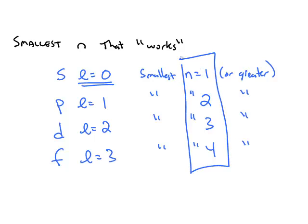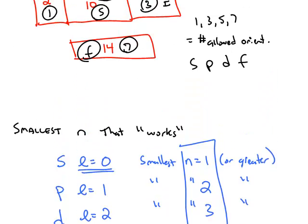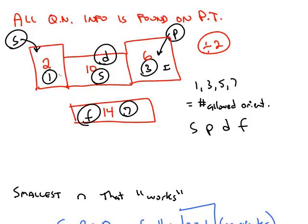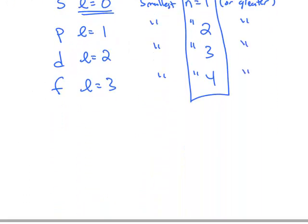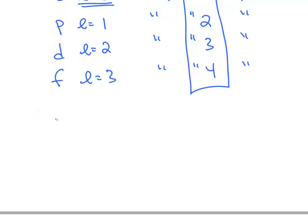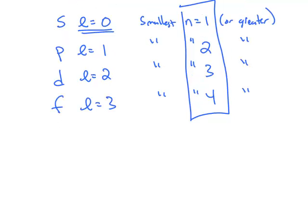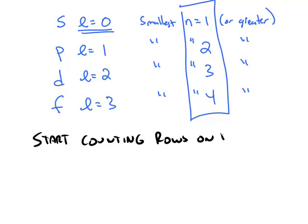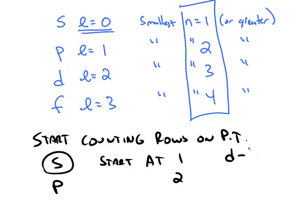So this is another pattern — one, two, three, and four — that we can use with our previous pattern of S, P, D, and F blocks on the periodic table. What this tells you is where you start counting the rows on the periodic table. In the S block, you start at one. The P block starts at two. The D block starts at three. And the F block starts at four.